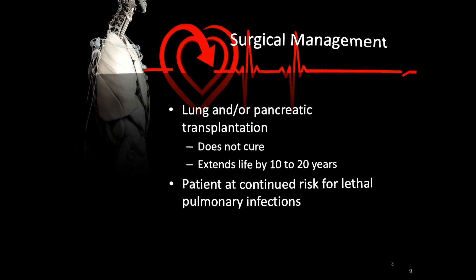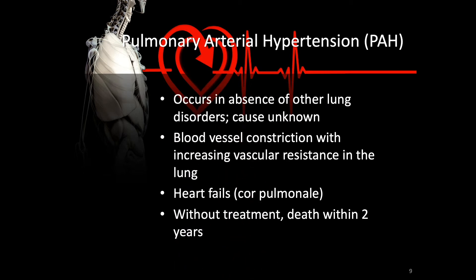General pulmonary hypertension can occur as a complication of other lung disorders. However, primary pulmonary arterial hypertension, or PAH, also known as idiopathic pulmonary hypertension, occurs in the absence of other lung disorders — that is, the cause is unknown. With PAH, the blood vessels constrict with increased vascular resistance in the lung, reducing perfusion and changing gas exchange. Over time, the heart will fail. The patient will have cor pulmonale, and without treatment, death will occur within about two years.